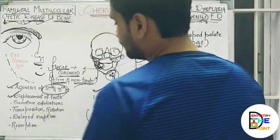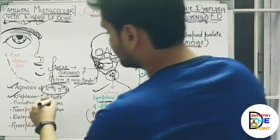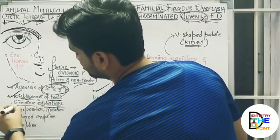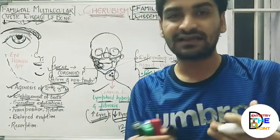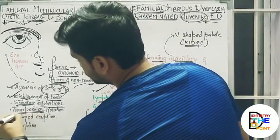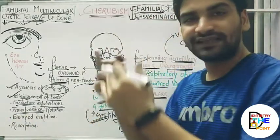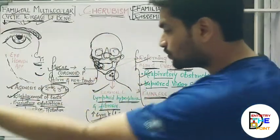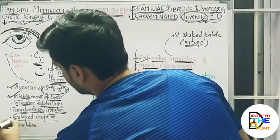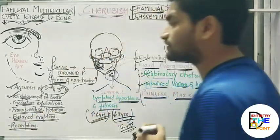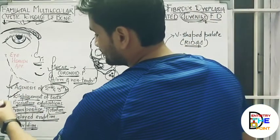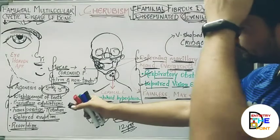There will be displacement of teeth due to rapid remodeling of bone, premature exfoliation where deciduous dentition is shed very early, transposition of teeth where the position changes from one place to another, rotation of teeth, delayed eruption, and sometimes resorption of teeth is also seen.